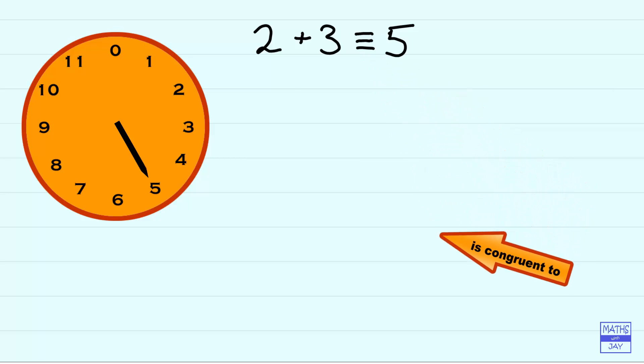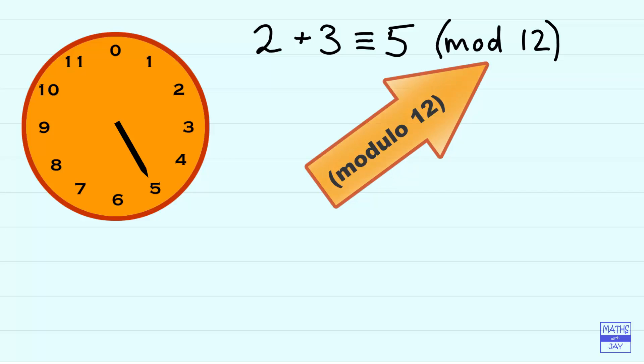And in brackets I'm writing mod 12. The mod 12 just tells us that we're working in modulo 12, that we've got a clock with 12 numbers on it. So that's fairly straightforward.